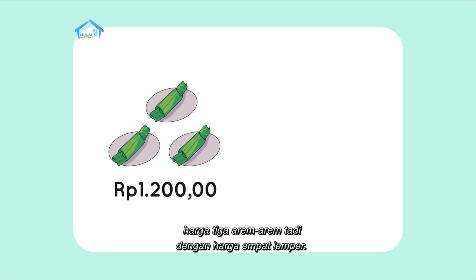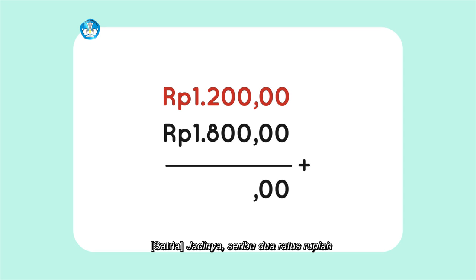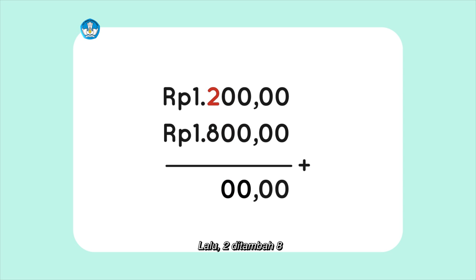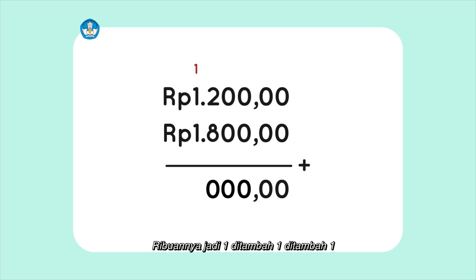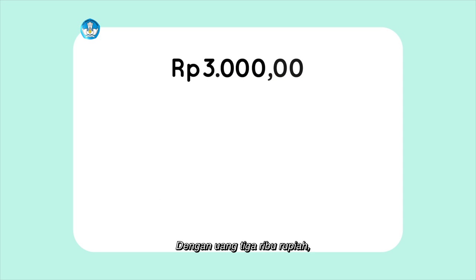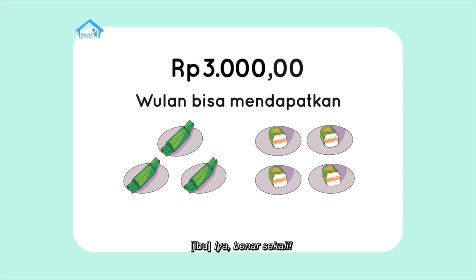Nah, coba kamu tambahkan harga 3 arem-arem tadi dengan harga 4 lemper. Jadinya Rp1.200 ditambah Rp1.800, bu. Satuannya 0 ditambah 0 sama dengan 0. Puluhannya juga sama. Lalu 2 ditambah 8 sama dengan 10. Angka 1 puluhannya pindah ke atas. Ribuannya jadi 1 ditambah 1 ditambah 1 sama dengan 3. Hasilnya Rp3.000. Dengan uang Rp3.000, Ulan bisa mendapatkan 3 arem-arem dan 4 lemper, bu. Iya, benar sekali.